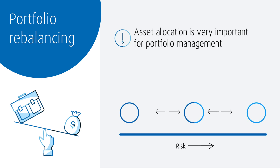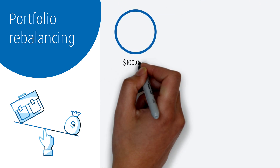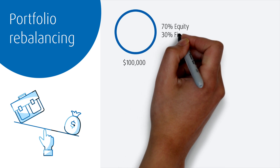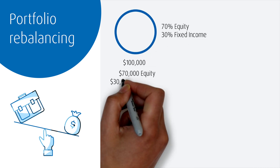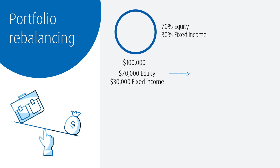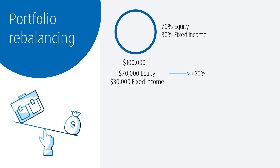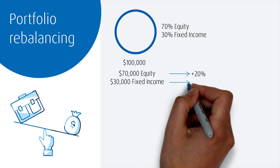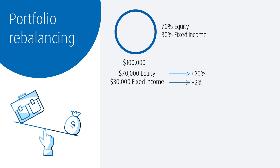Let's look at a simple example. Let's say we have a $100,000 portfolio with 70% equity and 30% fixed income. Over the next year, stocks have a relatively good year and earn 20%, and let's say our fixed income increases by 2%.